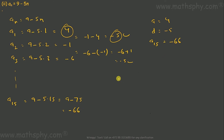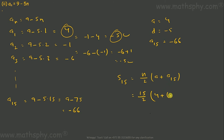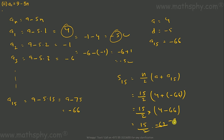We have to find the sum up to 15 terms. Using the formula n over 2 times (first term plus last term): 15 over 2 times (4 plus negative 66), which is 15 over 2 into negative 62. This gives us 15 times negative 31, which equals negative 465. So the sum of the first 15 terms for this equation is negative 465.